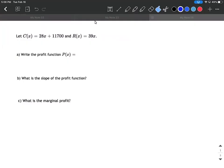Okay, on this problem we're given a cost function C(x) which is equal to 28x plus 11,700, and we're given a revenue function which is 39x.